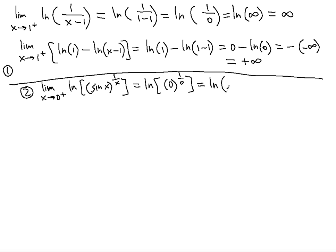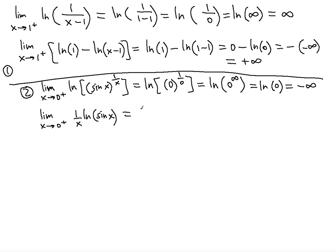Now, 0 to the infinity is not indeterminate — it equals 0. So we get ln(0), which is negative infinity. For the second method, bring down the exponent 1/x using log properties: the expression becomes (1/x) · ln(sin x). Inputting 0: 1/0 is infinity, and ln(sin 0) = ln(0) is negative infinity, so infinity times negative infinity is negative infinity — same answer.